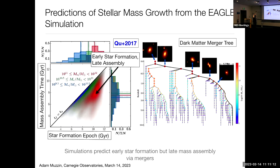There's one more piece of this that you need to unwind: when stars form is not necessarily when the galaxy forms. This is from the Eagle simulation, showing the assembly of a galaxy through mergers. It shows all the different pieces of a galaxy that ultimately merge together into the main body progenitor by redshift zero, illustrating that when the stars form is not necessarily when the galaxy forms.